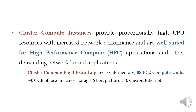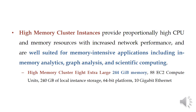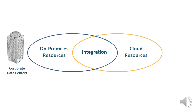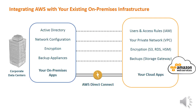Everything is measured in gigabytes. High memory cluster instances have 244 GB. There is also a cluster GPU quadruple GB memory instance. On-premise resources such as corporate data centers and cloud resources can be integrated. Integrating AWS with your existing on-premise infrastructure is supported.